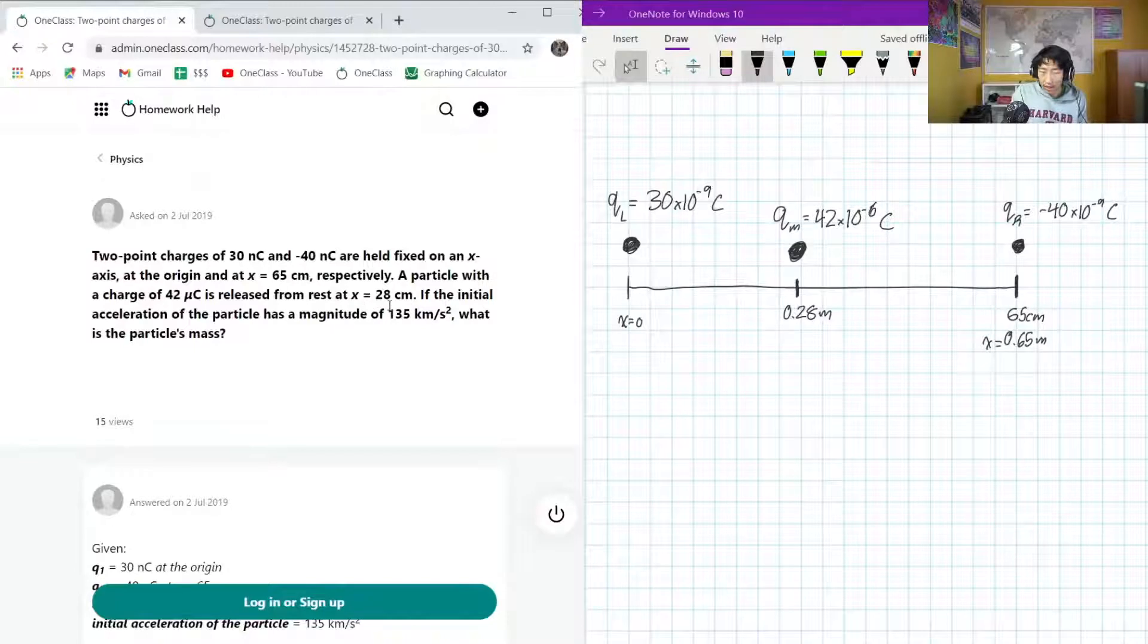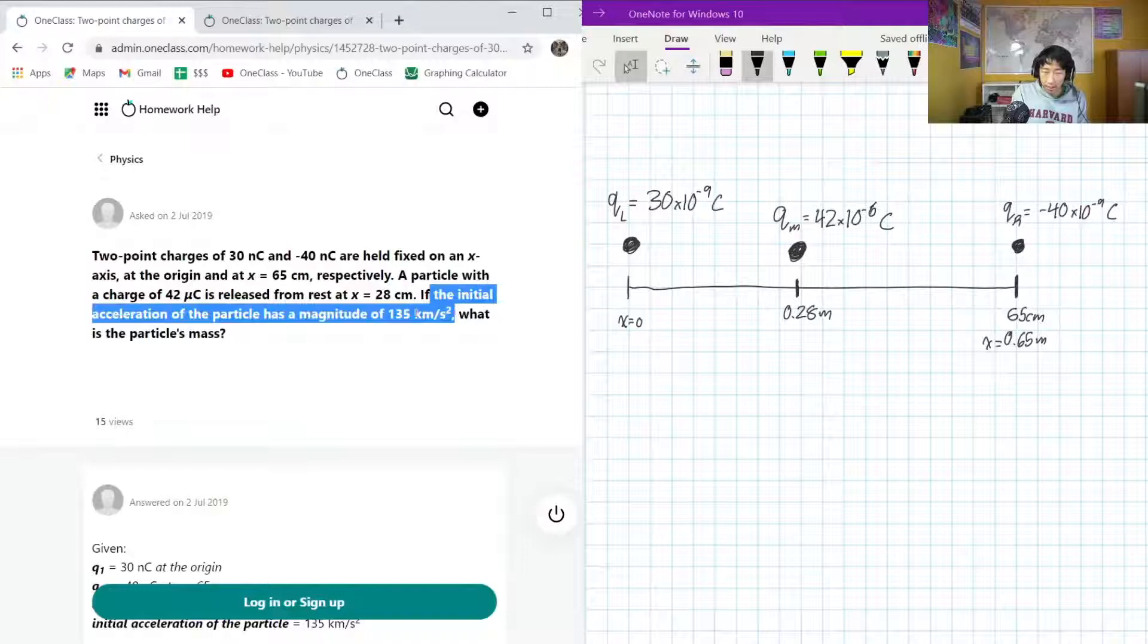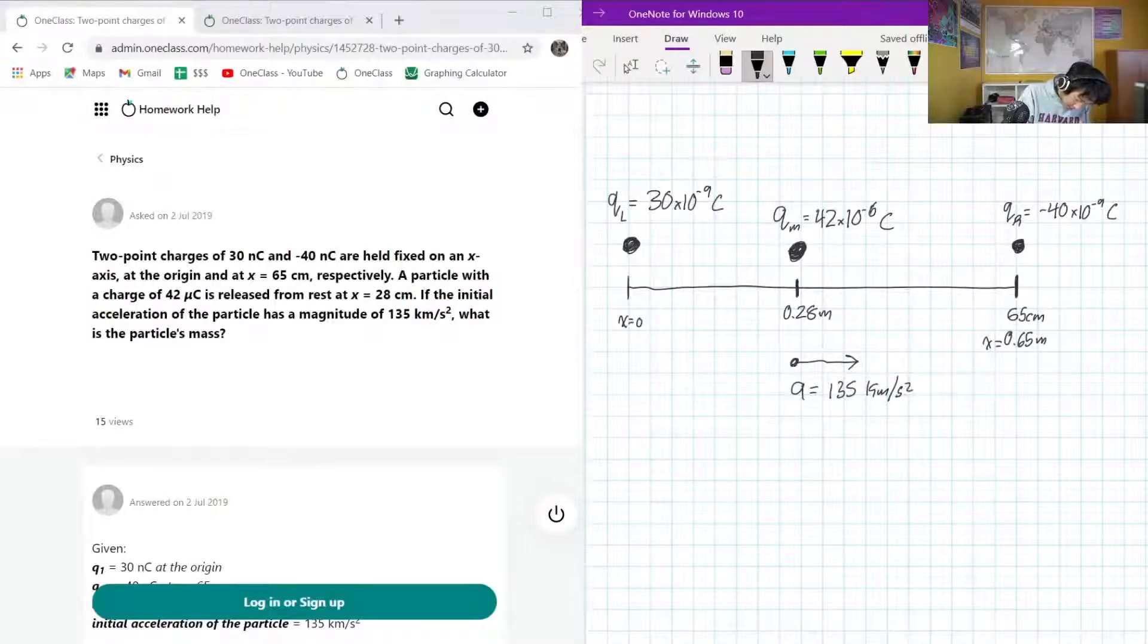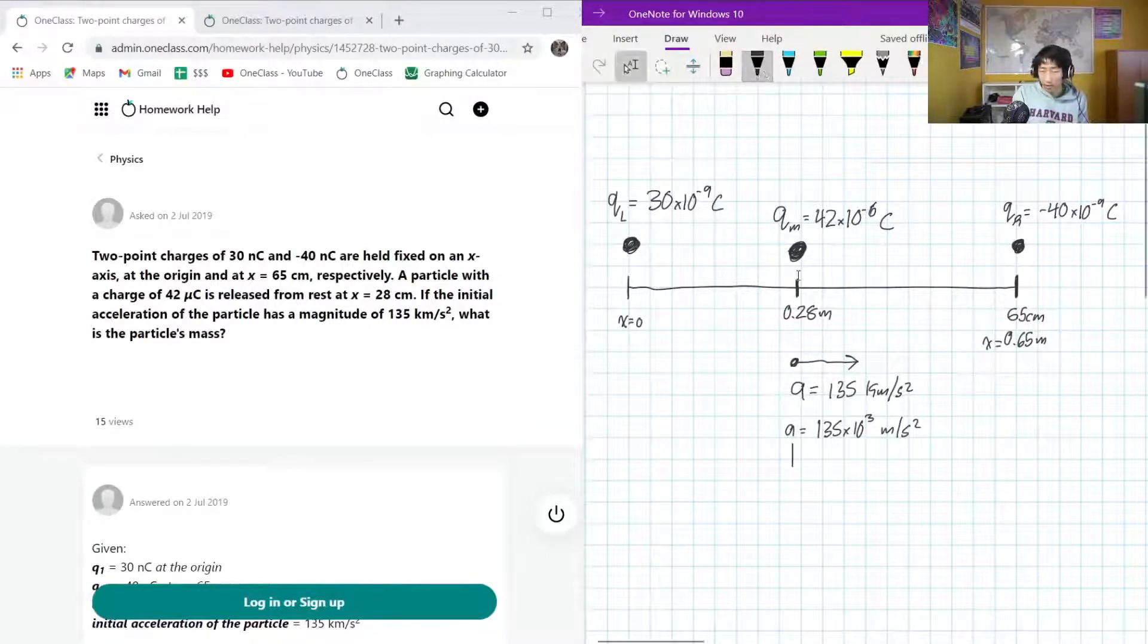And we know that it has an initial acceleration of 135 kilometers per second squared. So acceleration is equal to 135 kilometers per second squared, which is equal to 135 times 10 to the 3 meters per second squared. And since it's positive, it's going to be going in the positive x direction, that means towards the right, which makes sense because we know that the left charge and the middle charge have the same sign, so they're going to try to get away from each other.